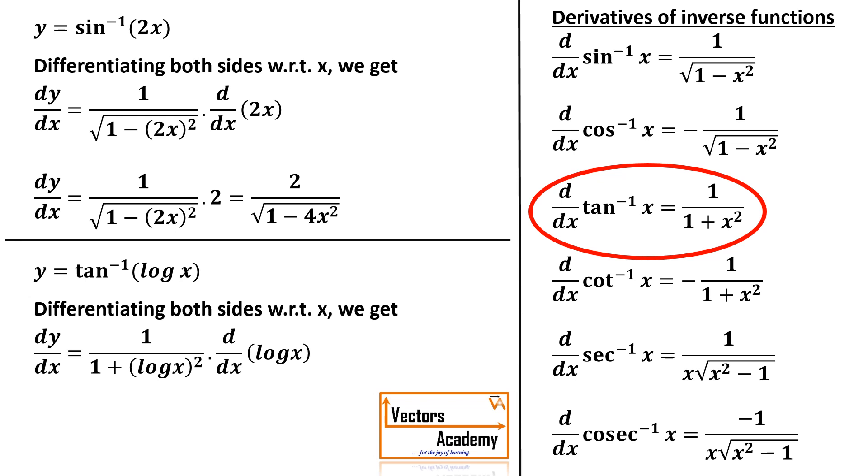As x is replaced by log x we will have an extra term that is derivative of log x. And what is derivative of log x? It's 1 by x. Hence the answer is 1 upon x into 1 plus log x the whole square.